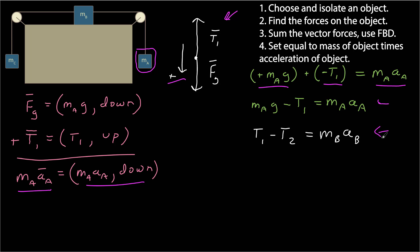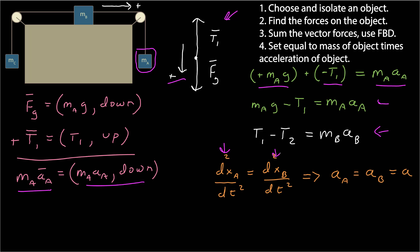Now, what can I say about the relationship between acceleration a and acceleration b? Since they're connected by a wire of constant length, every small step that a takes downward is exactly equal to the small step that b takes to the right. Dividing by a small time element dt, the velocities are the same, and differentiating again, the accelerations are the same. So acceleration a equals acceleration b, which I just call a — this works because I aligned my positive coordinate axes with the expected direction of motion.